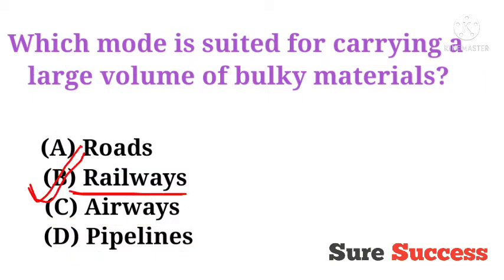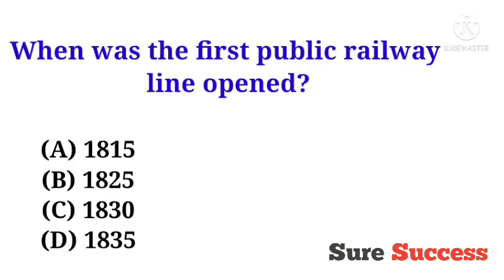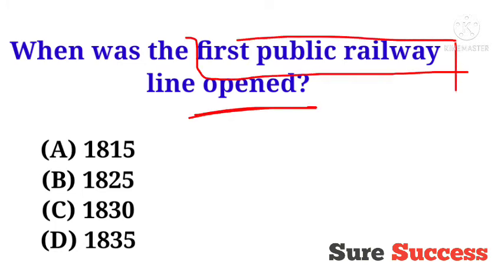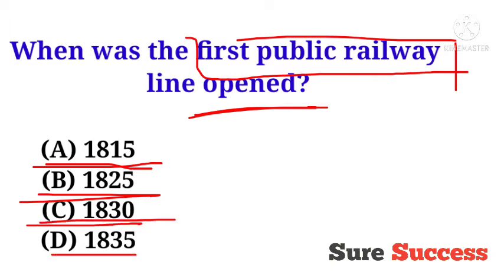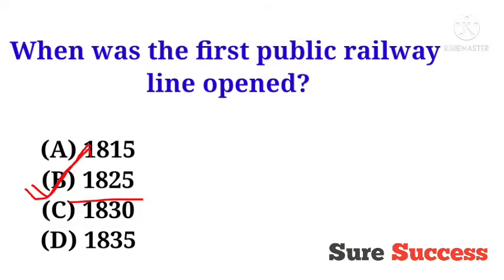Railways is best suited for carrying a large volume of bulky materials. When was the first public railway line opened? Options are 1815, 1825, 1830, and 1835. The correct answer is 1825 — it was the year the first public railway line opened.